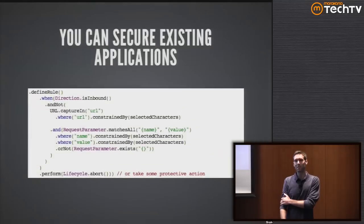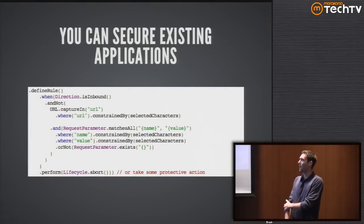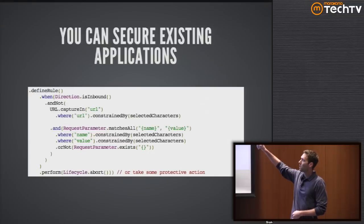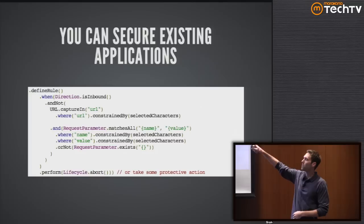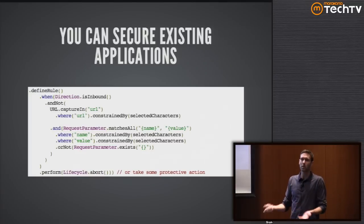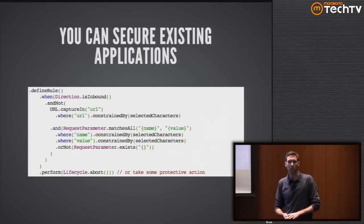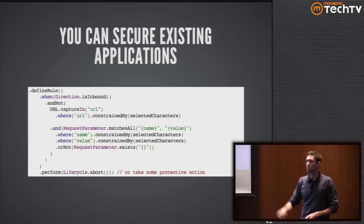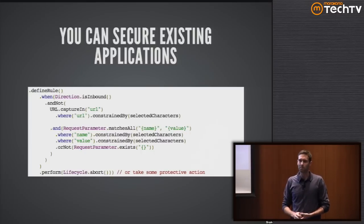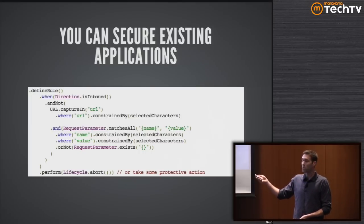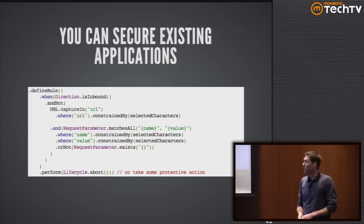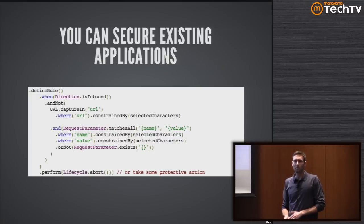We can secure existing applications without modifying existing code by adding URL rewriting functionality. When an inbound request has a URL not constrained to selected characters, or a request parameter with disallowed information, or bad headers - we just abort that request or take some other action. This is something you can do in any URL rewriting framework; it just takes a little work to set up your constraints and validations. It's worth thinking about if you have a mission-critical system.